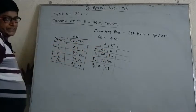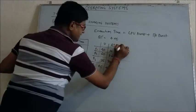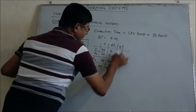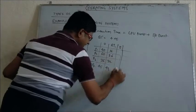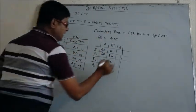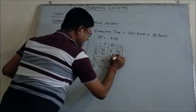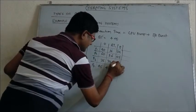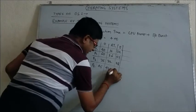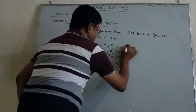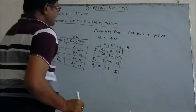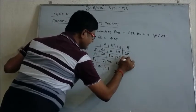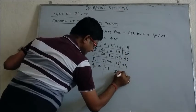After the first iteration, none of the processes has completed, so in the second iteration the remaining times are: P1 = 36 − 4 = 32, P2 = 56 − 4 = 52, P3 = 32 − 4 = 28, P4 = 41 − 4 = 37. In the third iteration: P1 = 28, P2 = 48, P3 = 24, P4 = 33.